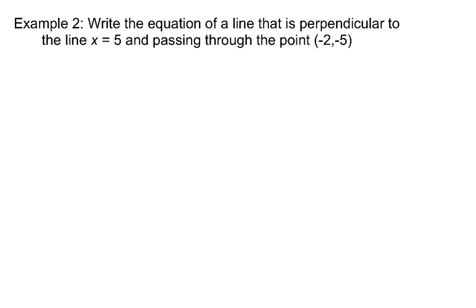The next one is very much the same. Write the equation of a line that is perpendicular to the line x=5. So let's think about x=5. Much like we saw just now, that's going to be a vertical line. If we want a line that's perpendicular to a vertical line, it's going to be a horizontal line. So we're actually looking for a horizontal line, and we know that horizontal lines have equations of the form y equals something, y only.